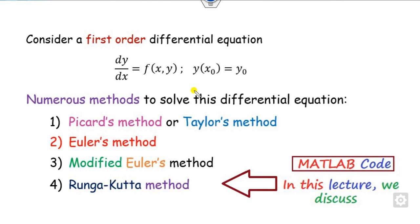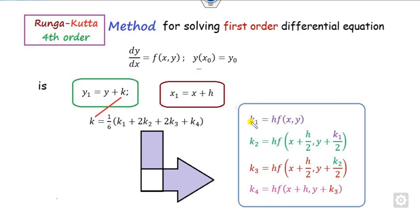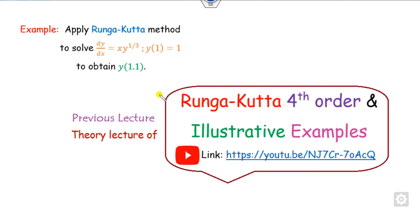In our last lectures, we saw how to define the MATLAB code for Euler's modified method and others. In this lecture, we will cover the Runge-Kutta method. The brief theory behind it: we update positions from (x0, y0) to (x1, y1), where x is updated by x plus h — h being the step size — and the y coordinate is updated by y plus k, where k is the weighted average of the k values k1, k2, k3, and k4.